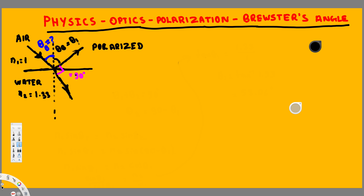We're going to use Snell's law. In order to apply Snell's law, we need to know the incident angle and the refracted angle. Let's call this refracted angle theta 2. Now we have two unknown variables: theta 1 and theta 2. Let's try to bring this down to one unknown variable so it will be easier to solve.